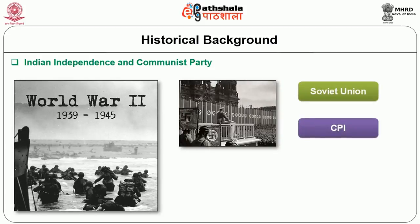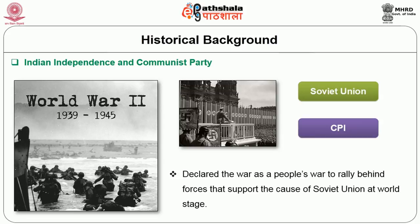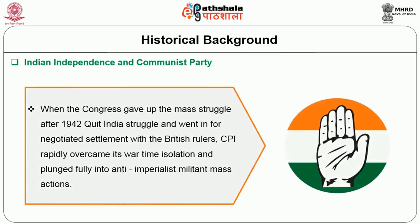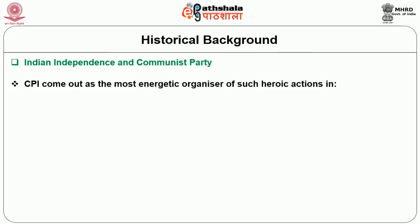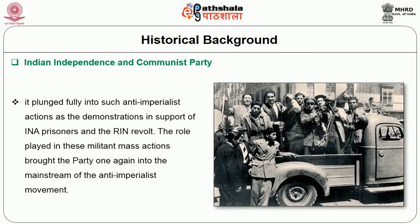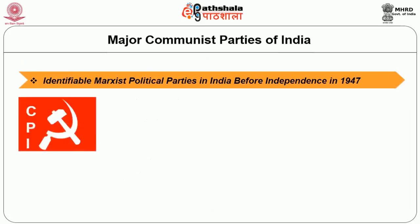When, in the later phase of the Second World War, after Nazi Germany attacked the Soviet Union, CPI declared the war a people's war and rallied behind forces that supported the cause of the Soviet Union at the world stage. Later, when the Congress gave up the mass struggle after the 1942 Quit India movement and went in for a negotiated settlement with the British rulers, CPI rapidly overcame its wartime isolation and plunged fully into anti-imperialist militant mass actions. CPI came out as the most energetic organizers of heroic actions in Telangana, Punnapra, VLR, Tebhaga, etc., as well as demonstrations in support of the INA prisoners and the RIN revolt. The role played in these militant mass actions brought the party once again into the mainstream of the anti-imperialist movement.